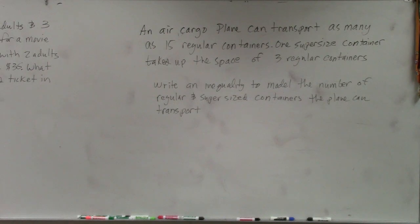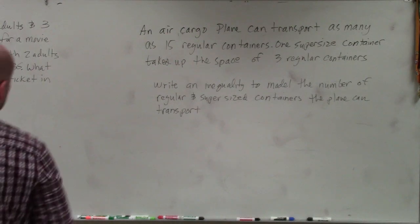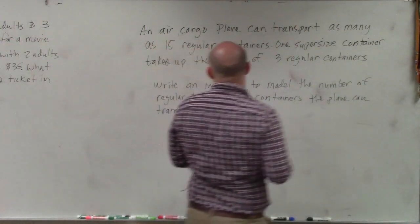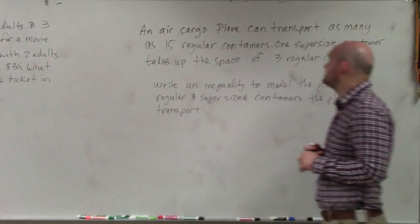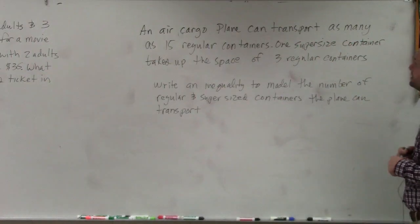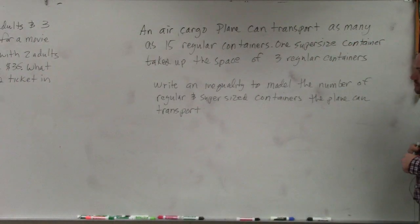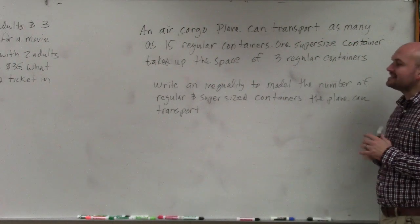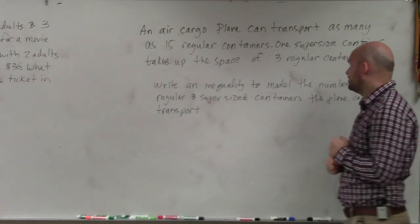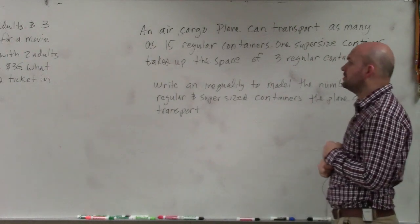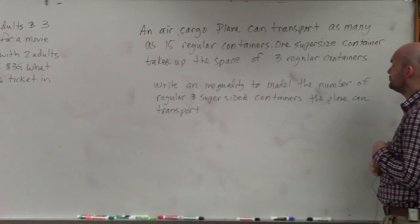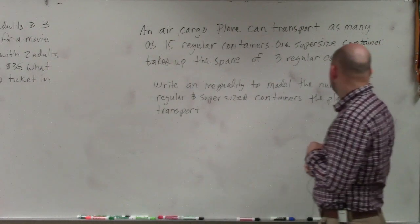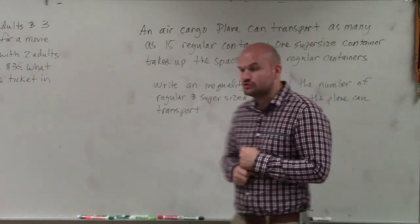In this example, an air cargo plane can transport as many as 15 regular containers. One supersized container takes up the space of three regular containers. It asks us to write an inequality to model the number of regular and supersized containers the plane can transport.